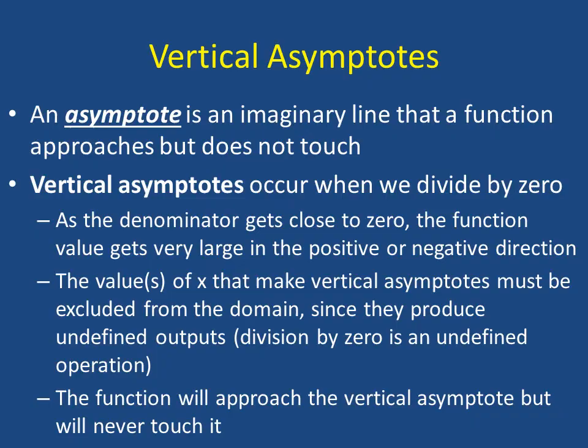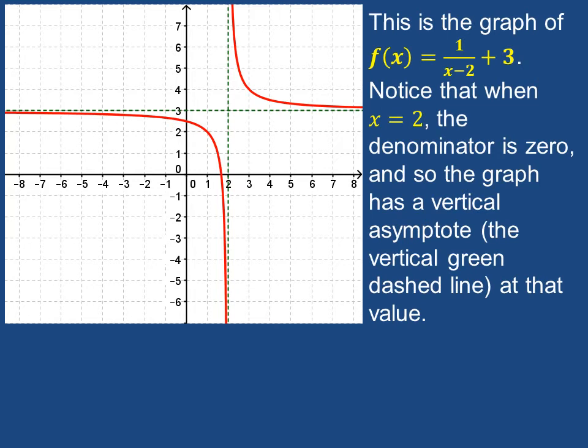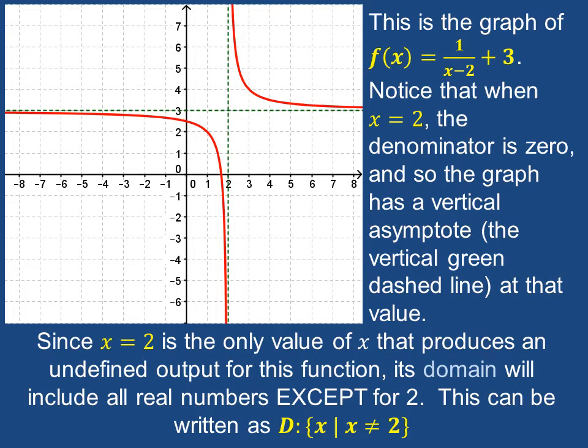So let's look at this graph as an example. This is the graph of f of X equals 1 over X minus 2 plus 3. Notice that when X equals 2, the denominator is 0. And so the graph has a vertical asymptote at that value. The vertical asymptote in the picture here is the vertical green dashed line. Since X equals 2 is the only value of X that produces an undefined output for this function, its domain will include all real numbers except for 2. This can be written as shown at the bottom of the screen.